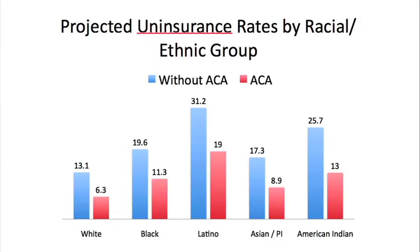Without the ACA: uninsured rates were 13% for whites, almost 20% for blacks, a whopping 31% for the Latino population, 17.3% for Asian Pacific Islanders, and 25% for the American Indian population.